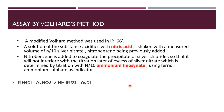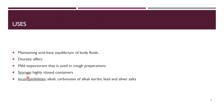The second assay method is Volhard's method, which acidifies with nitric acid using silver nitrate and nitrobenzene as reagents. The basic reaction is: NH4Cl + AgNO3 → NH4NO3 + AgCl, which determines the purity of ammonium chloride.